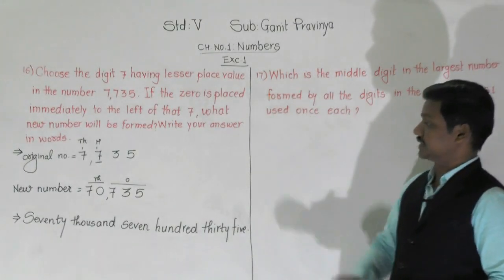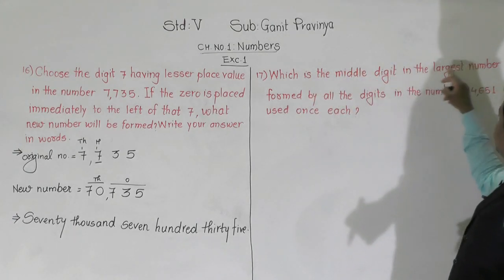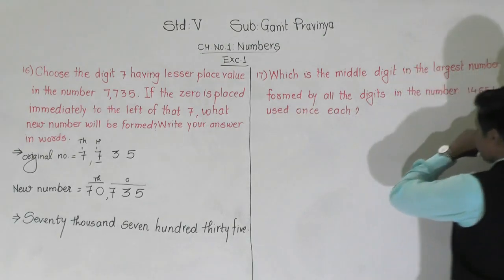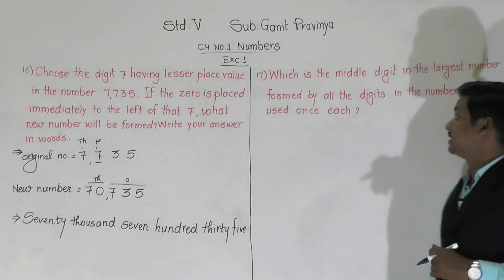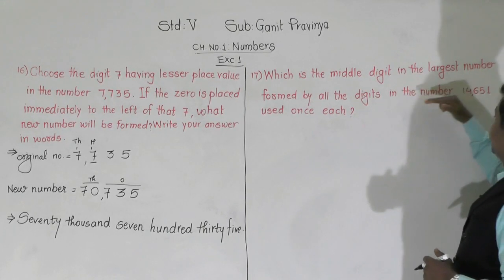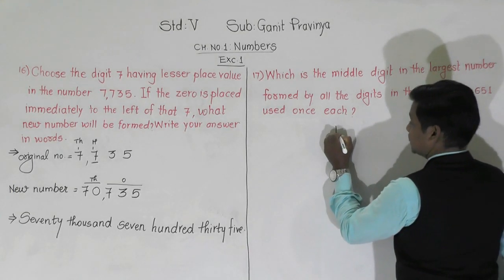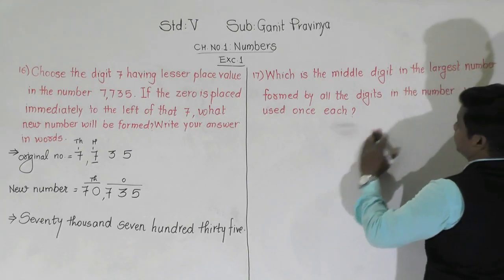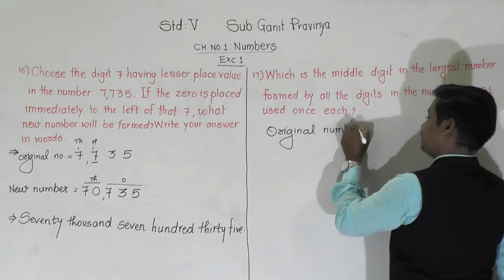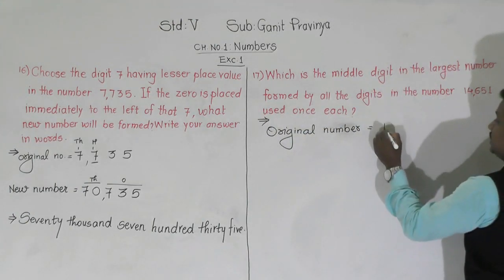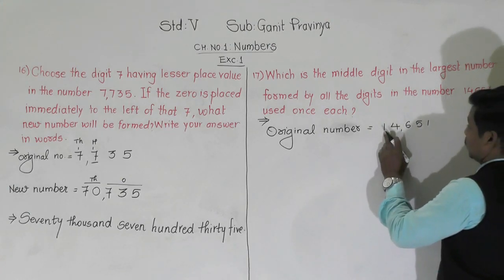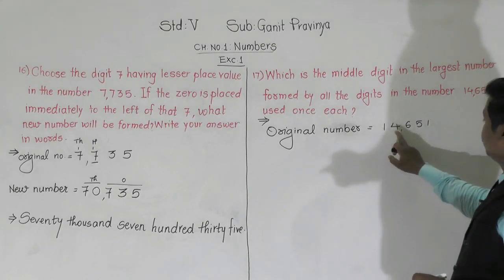Now we will move towards the next question, question number 17: Which is the middle digit in the largest number formed by all the digits in the number 14,615? The original number is 14,651. In this number, there are digits 1, 4, 6, 5, and 1.